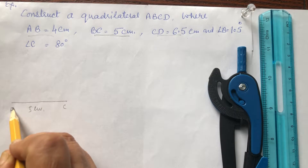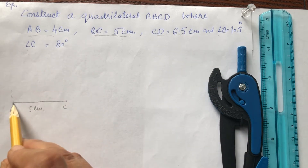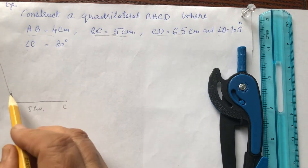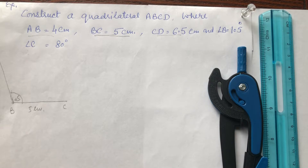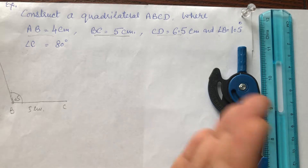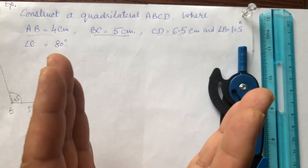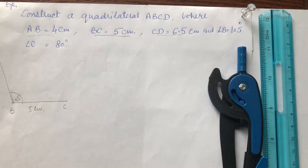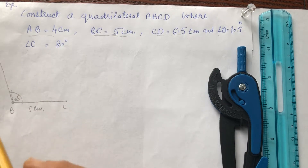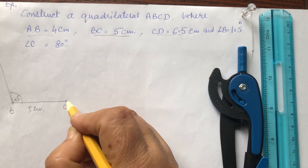At point B, make an angle of 105 degrees. This is the 90 degree position, and if we make 105 that will go outside. Angles bigger than 90 degrees go outside like this, and angles less than 90 degrees go inside. So 105 is more than 90, so it will go outside.